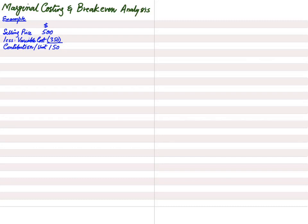Contribution is basically profit before deducting any fixed cost. The full form is 'contribution towards covering fixed costs and making a profit.' We use contribution in two ways: first, to cover the fixed costs of the business; after covering all fixed costs, the remaining contribution is profit. Fixed costs for the shop include rent, salesman's salary, electricity bill, and taxes.